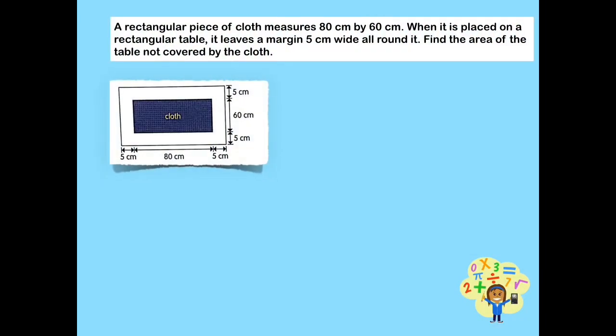Let us look at the given problem. A rectangular piece of cloth measures 80 cm by 60 cm. When it is placed on a rectangular table, it leaves a margin 5 cm wide all around it. Find the area of the table not covered by the cloth. We know that the piece of cloth is rectangular in shape, with a length of 80 cm and a breadth of 60 cm.